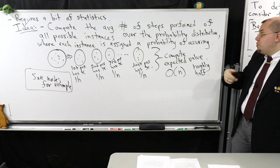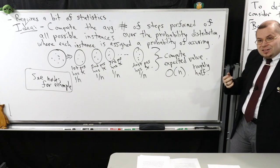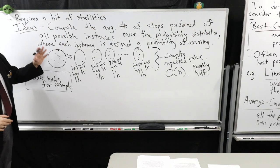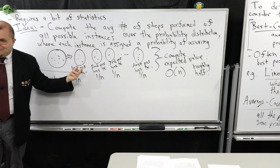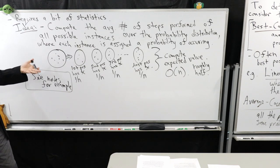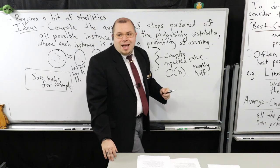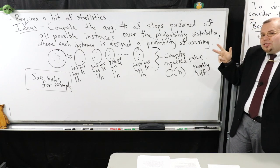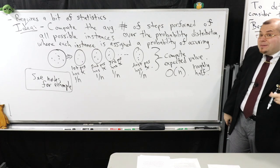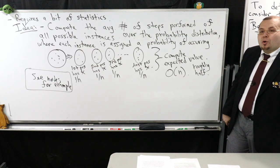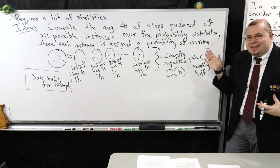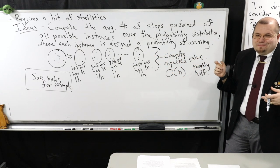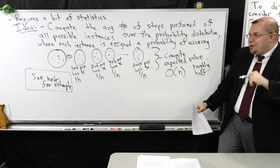Some people might use a different distribution rather than uniform — for example, if they know the key most likely occurs somewhere in the middle, they could pick a distribution that looks more like a bell curve. That kind of prior information can help find things more easily. That's why average case analysis can be useful. But it's more complicated because you have to split all instances into different classes and calculate a probability for each. In this course, we're going to focus primarily on worst case analysis.